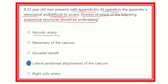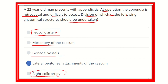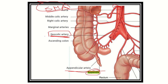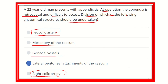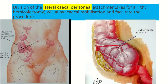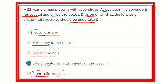Evaluating the options: the iliocolic artery is not correct as it is a small structure unrelated to direct access. Mesentery of the cecum is also not correct as it is easy to remove separately. Gonadal vessels lie far away from the cecum and appendix. Right colic artery lies more superiorly and is also far from the appendix and cecum. Therefore, the correct final answer is the lateral peritoneal attachment of the cecum — cutting this allows cecal mobilization and gains access to the retrocecal fixed appendix.